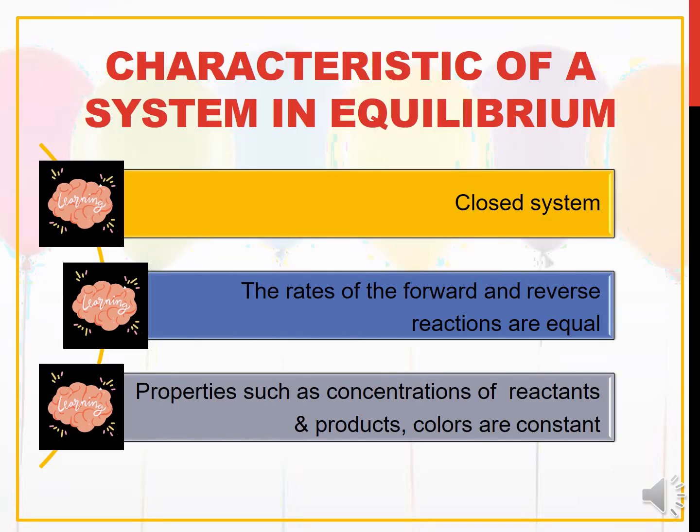So these are the main characteristics of a system in equilibrium. We have three characteristics: the first one, it must be in a closed system. The second one, the rate of forward and reverse reactions are equal. And the properties such as concentration of reactants and products and the colors are constant.